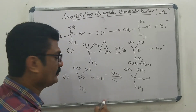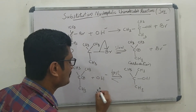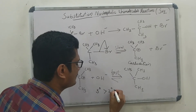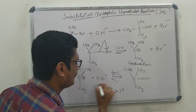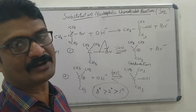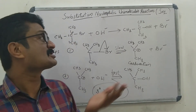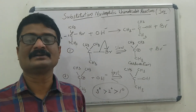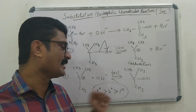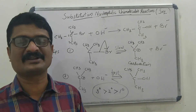Now the order of reactivity — important from an examination point of view. Towards SN1 reaction: tertiary is more reactive, then secondary, then primary. The reactivity decreases in this order. In SN2, it is the opposite: primary is more reactive and tertiary is less reactive.